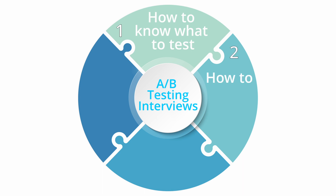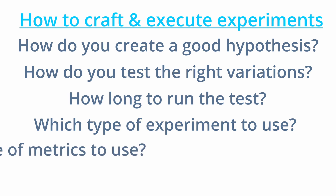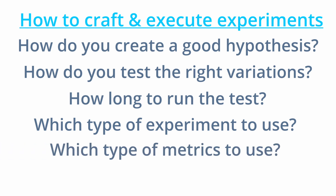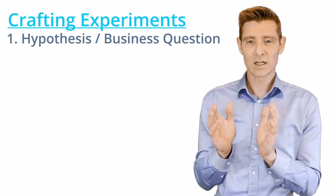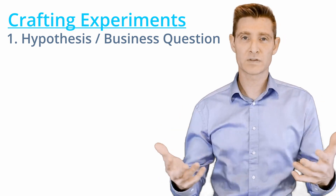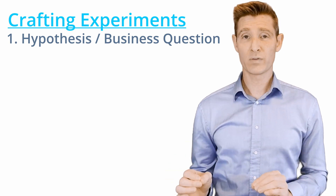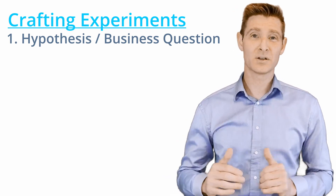The next category of questions is how to craft and create a good test once you know what you're going to test. Types of questions include: how do you come up with a good hypothesis, how do you make sure you're testing the right variations, how do you know how long to run the test, and what type of metrics to use. You need to know how to form a good hypothesis or a strategic business question. I prefer the business question — a hypothesis is very closed, like 'if I test this, then this will happen,' whereas a business question is more open, like 'how do we influence this visitor experience?'